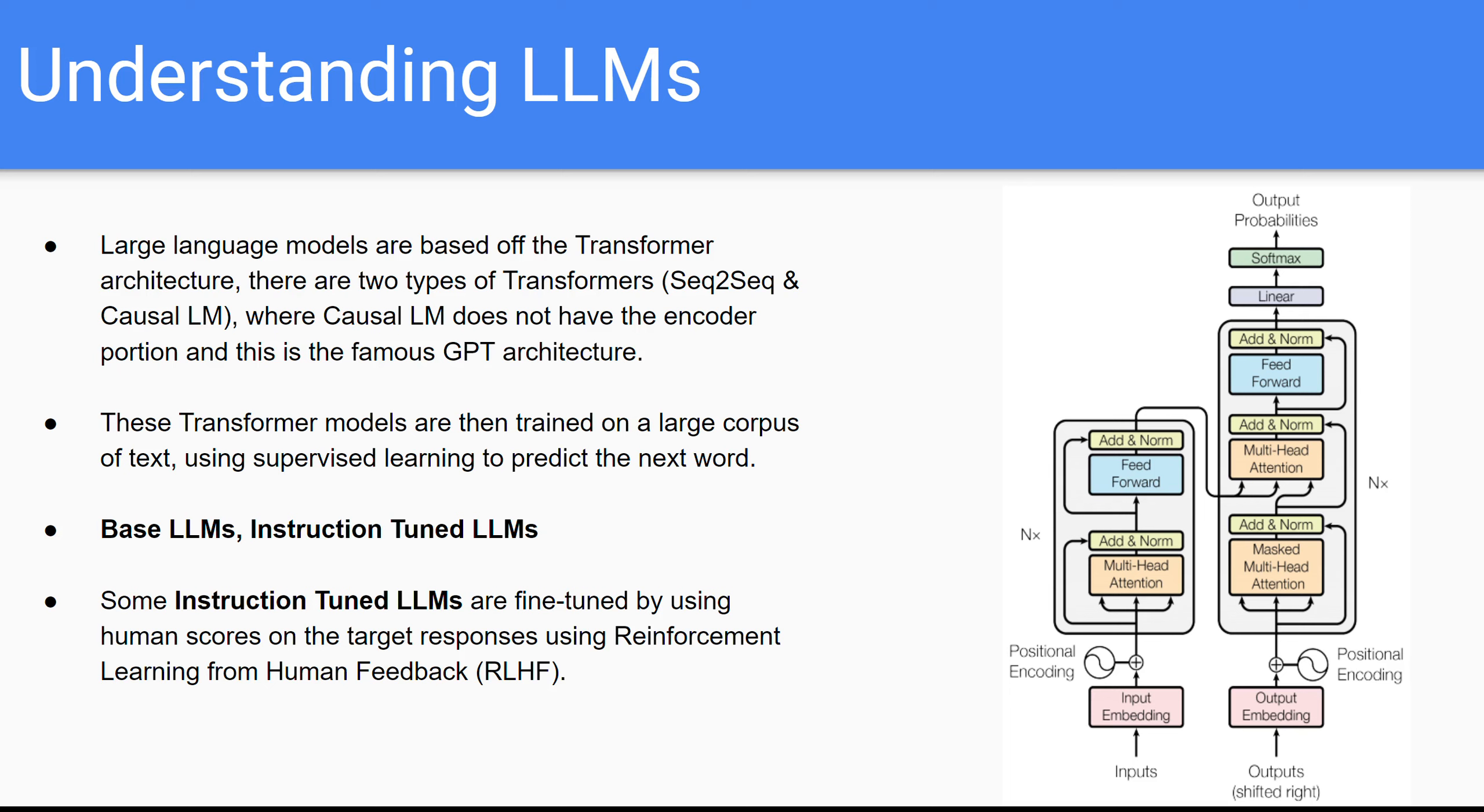But we want this model to not just autocomplete our instruction. We want it to be able to take in an instruction and give us the response. Like chat GPT is really good at writing articles. If you tell it to write an article, it'll write an article. If you tell it to summarize some texts, it'll summarize that text. And so how do we get it from base LLM where it's just good at generating text to instruction tuned?